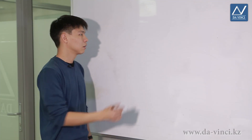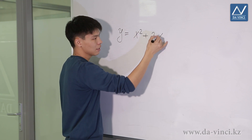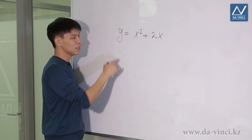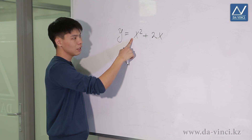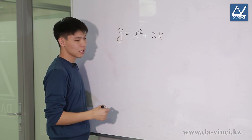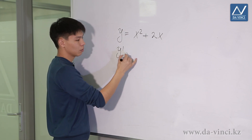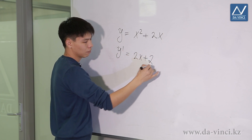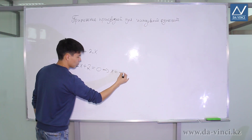Let's consider an example. Given the function y = x² + 2x, it is required to examine this function for monotony. We know that this is a parabola with branches directed upwards — it decreases to the vertex and then increases from the vertex to infinity. Using the derivative: y' = 2x + 2. Let's equate this derivative to 0 and find x = -1.